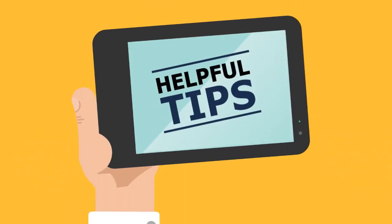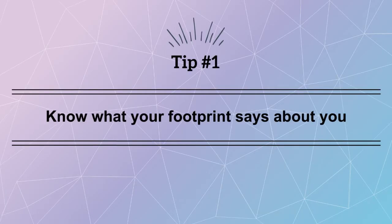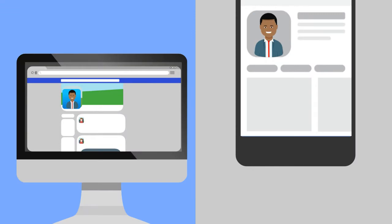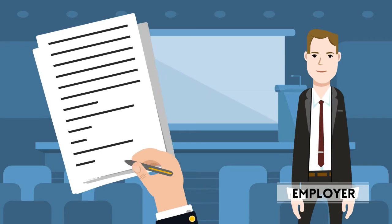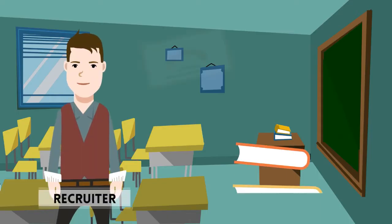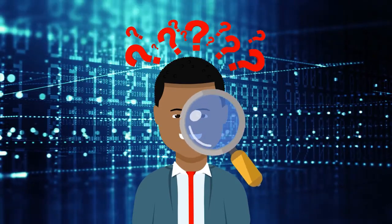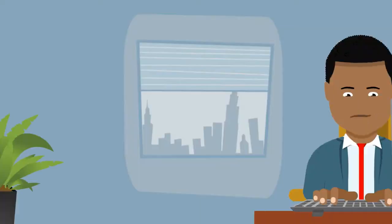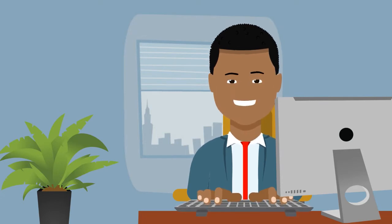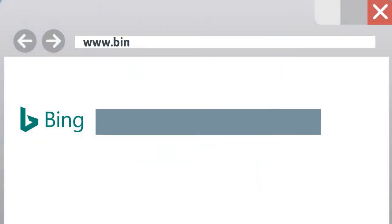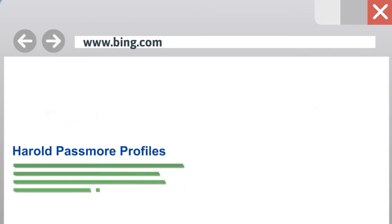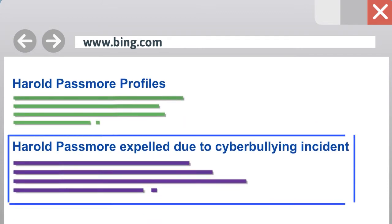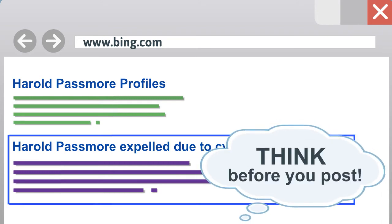Keep the following tips in mind when you go online to manage your digital footprint. Tip number one: know what your footprint says about you. Other people use your digital footprint to make judgments about you online. This can include employers when you apply for a job or recruiters when you apply for academic programs. It's important to know what your digital footprint says about you and how your information is being used. To see what your personal brand is online, you can search for yourself. Search for your name in the Bing search engine and see what results are displayed. If these results don't show what you want, think about what you share online and what information you allow other people to see.